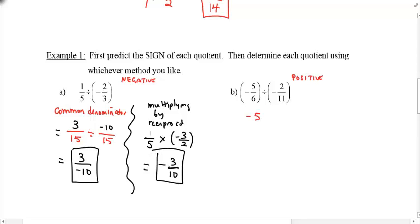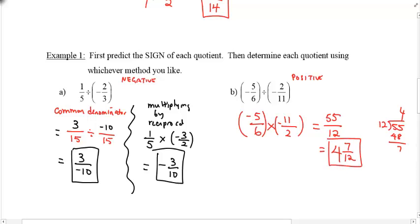I'll just multiply by the reciprocal for part B. So 11 over 2, negative. We know our answer is going to be positive, so that's fine. 5 times 11 is 55. 6 times 2 is 12. Once again, I better rewrite this as a mixed number. I think 12 goes into 55 four times. 4 times 12 is 48. 55 minus 48 is just 7. So this is just 4 and 7 twelfths.